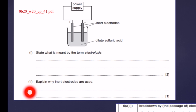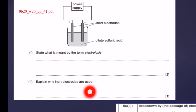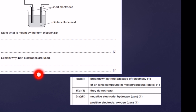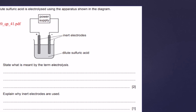Part 2: explain why inert electrodes are used. As you know, inert means they don't react, so the answer is 'they do not react,' which gives you the complete one mark.